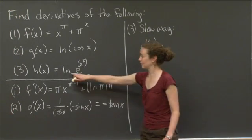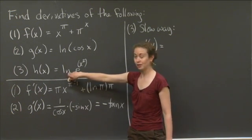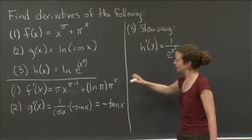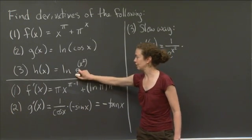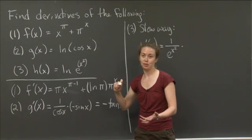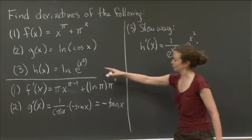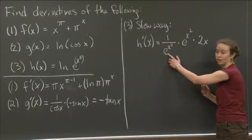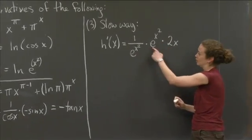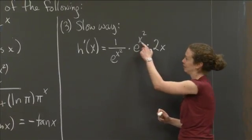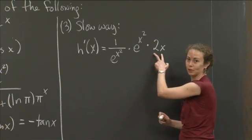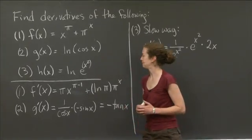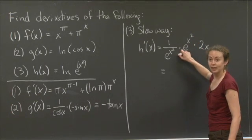The derivative of the natural log function is 1 over x, so evaluated here it gives 1 over e to the x squared. Then I take the derivative of the next inside function, e to the x squared, which by another chain rule gives e to the x squared times the derivative of x squared, which is 2x. So this part is the derivative of natural log at e to the x squared, this part is the derivative of e to the x squared, and this is the derivative of x squared. I have a product of three pieces from a composition of three functions. But e to the x squared divided by e to the x squared is 1, so I get 2x.